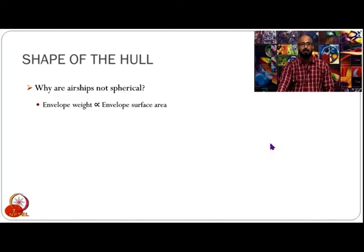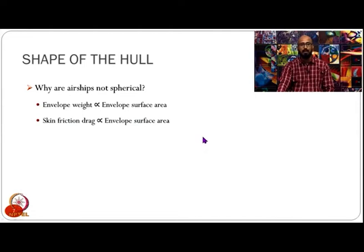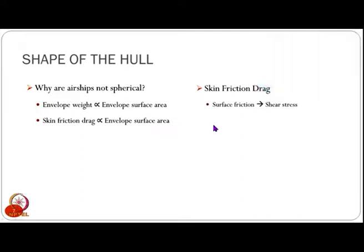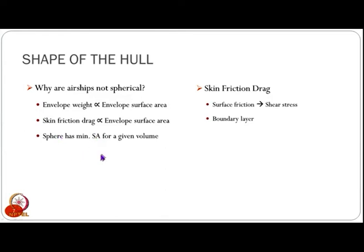When we have a sphere, the total weight of the airship would go down because the envelope weight is proportional to the envelope surface area. We would also have lower skin friction drag because skin friction drag is proportional to the envelope surface area — it arises from the shear stress between fluid layers forming a boundary layer on the surface. A sphere gives the maximum volume for the lowest surface area, i.e., minimum surface area for a given volume, so it reduces both envelope weight and skin friction drag.